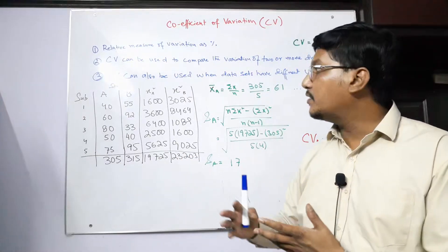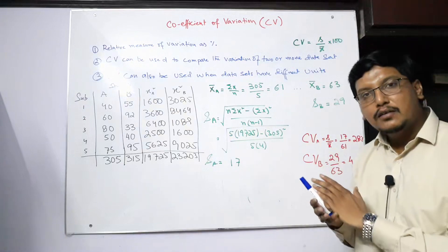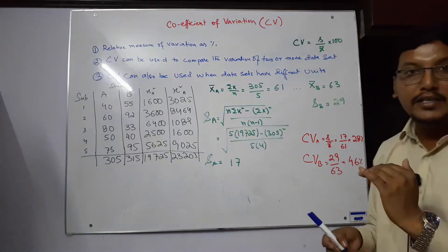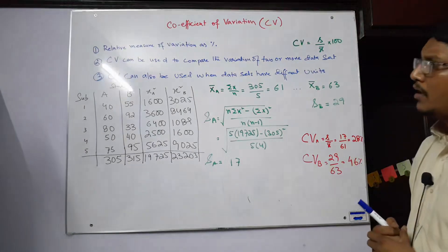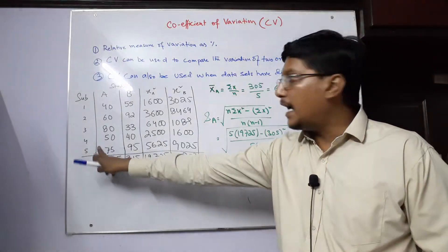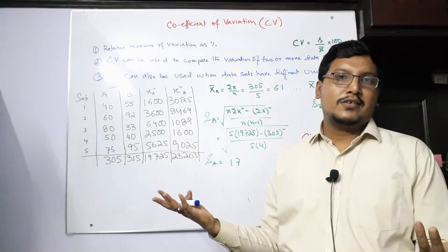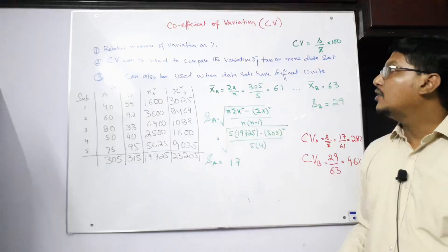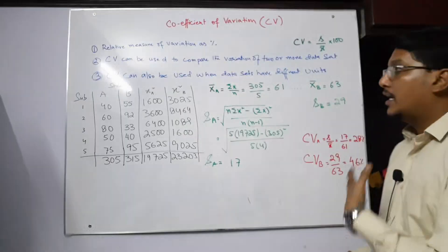The third point shows that the coefficient of variation can also be used when data sets have different units. These marks we compared are both in the same unit — marks to marks. But the coefficient of variation has another quality: there is no need for the same units. For example, if one data set has marks and another has number of production units, these are two different units and we can compare them using the coefficient of variation.